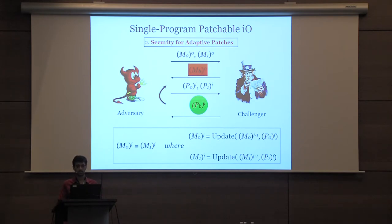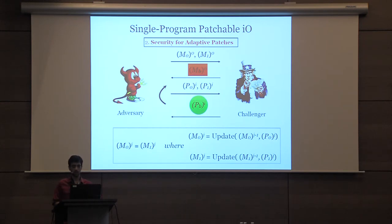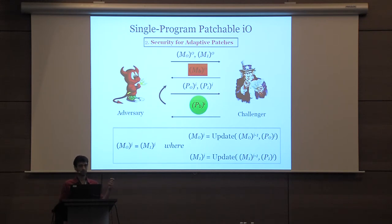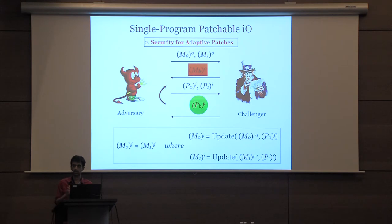The security requirement is a generalization of IO. There are two worlds: a left world corresponding to challenge bit 0 with machine M0 and patches parameterized by bit 0, and a right world with machine M1 and patches parameterized by bit 1. As long as the set of patch machines from the left and right worlds are equivalent, the adversary should not be able to distinguish whether the challenger obfuscated the machine and encoded the patches from the left or right world.